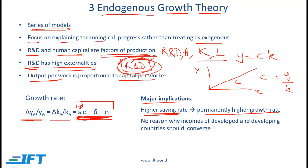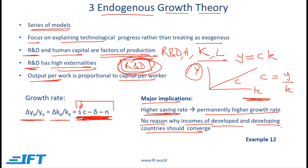The other key implication of the endogenous growth theory is that there is no reason why incomes of developed and developing countries should converge. As capital per worker goes up, output per worker also keeps increasing without diminishing returns. I want you to work through example 12, which highlights the difference between the neoclassical theory and the endogenous growth theory.